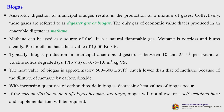The first and foremost important microbial conversion product is biogas, which comes from anaerobic digestion. Anaerobic digestion of municipal sludges results in the production of a mixture of gases. Collectively these are referred to as either digester gas or biogas. The only gas of economic value produced in an anaerobic digester is methane.